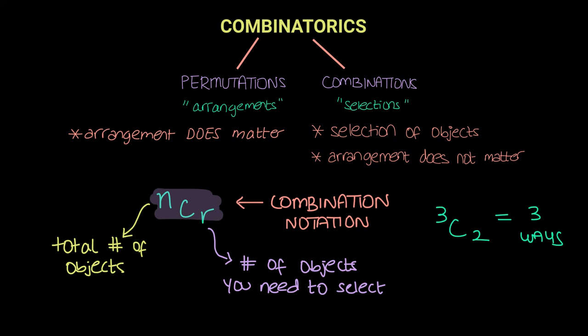And lastly, NCR mathematically can be written as N factorial over R factorial times N minus R factorial. The logic behind this formula is explained in the previous video on NCR.